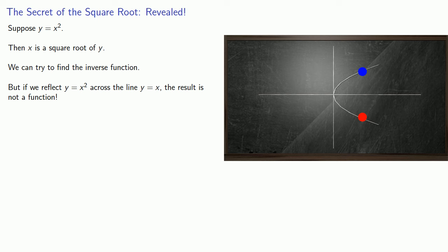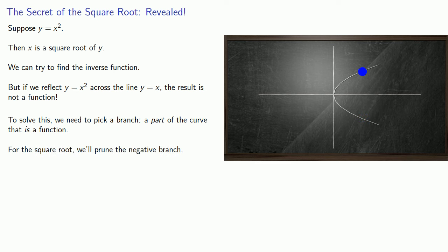Now if you imagine this curve to be like a tree or some sort of plant, we can imagine that there's two branches here. And so to solve this problem of not having a function, we need to pick a branch, a part of the curve, that is a function. And so for the square root, we'll prune the negative branch, we'll chop it off and get rid of it, and this gives us the graph of something that is a function, and leads to our definition as square root of n using the symbol gives us the non-negative number whose square is n.